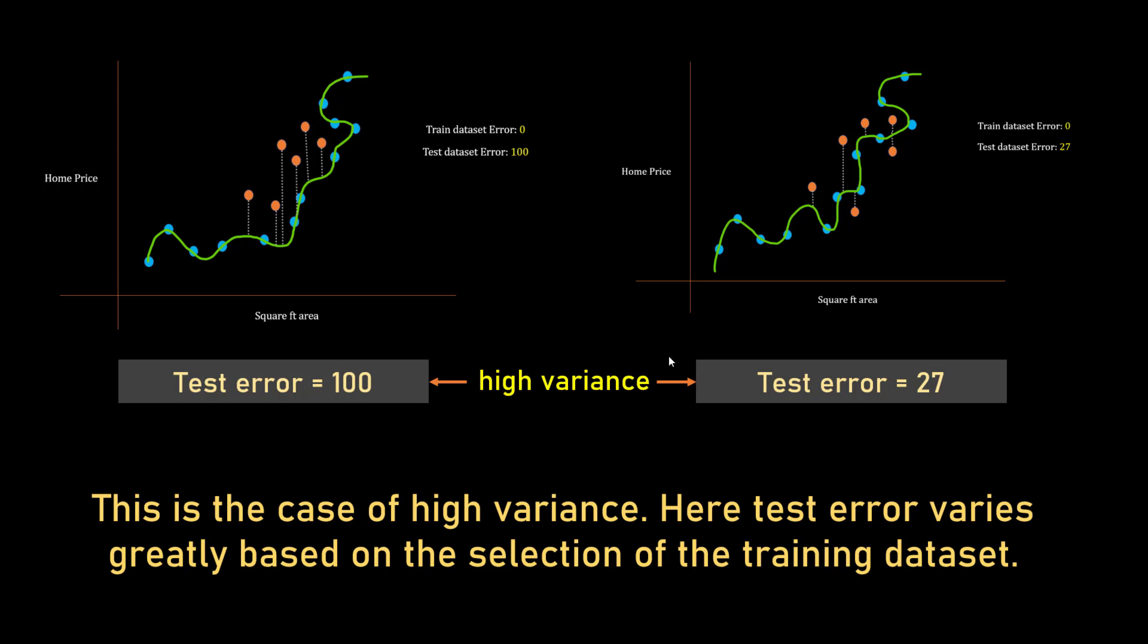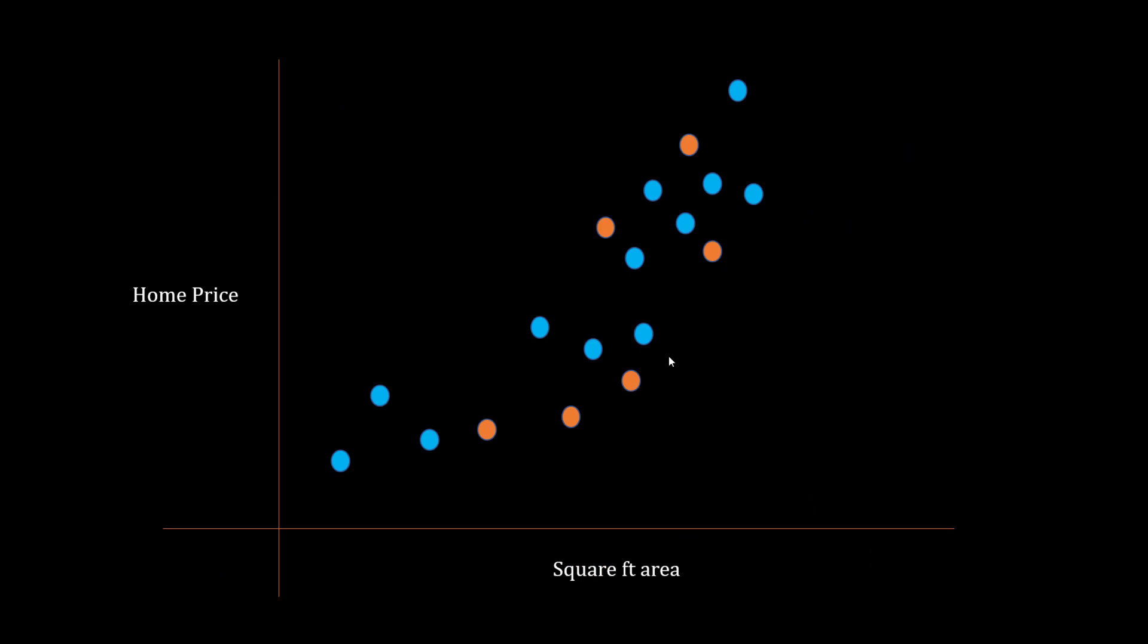Let's look at another scenario where I have the same data set split into train and test samples. This time instead of having a complex model that overfits my training samples, I'm trying to come up with a very simple model, let's say a linear equation which is underfitting your training sample because a linear equation is a straight equation - it cannot truly capture the pattern in your training samples. The straight line cannot pass through all the blue dots, so it's a simple model.